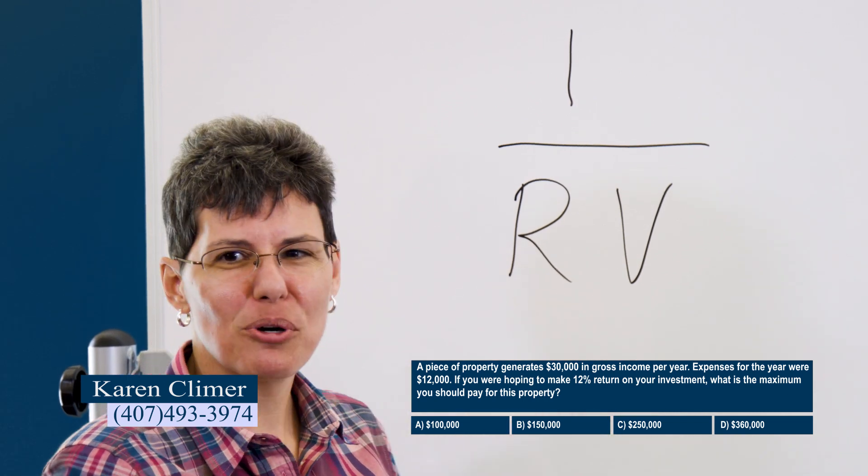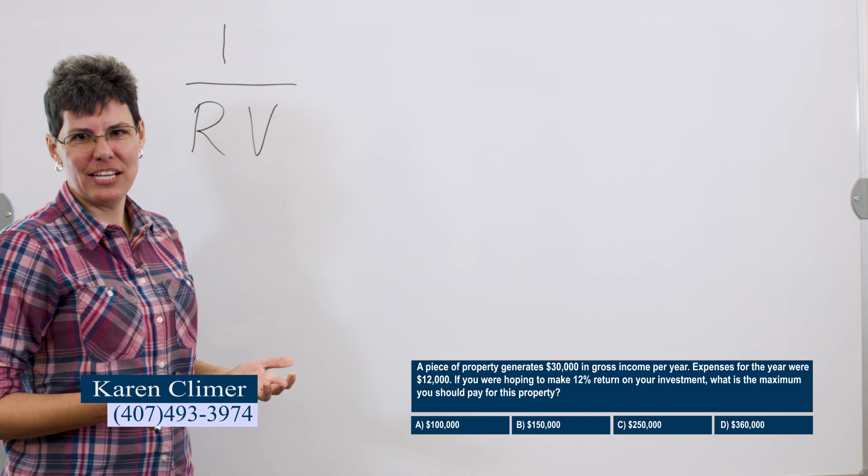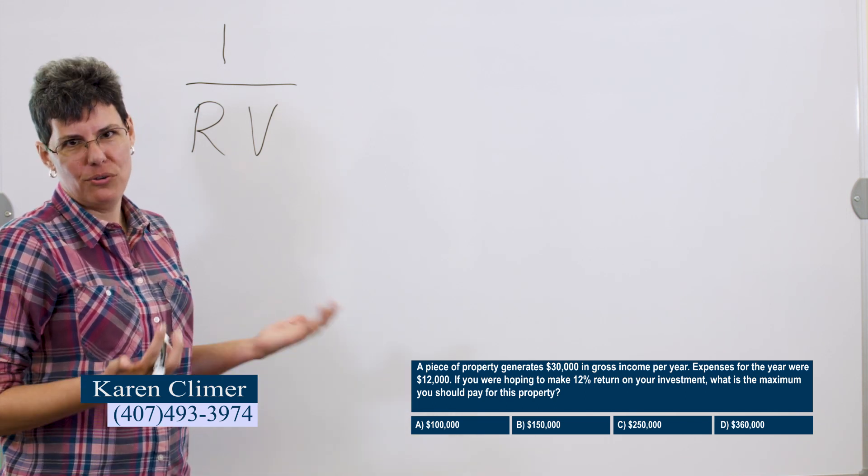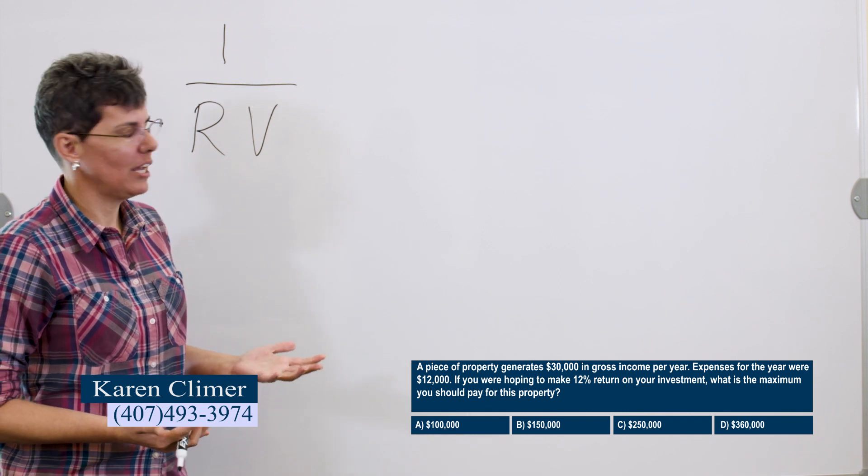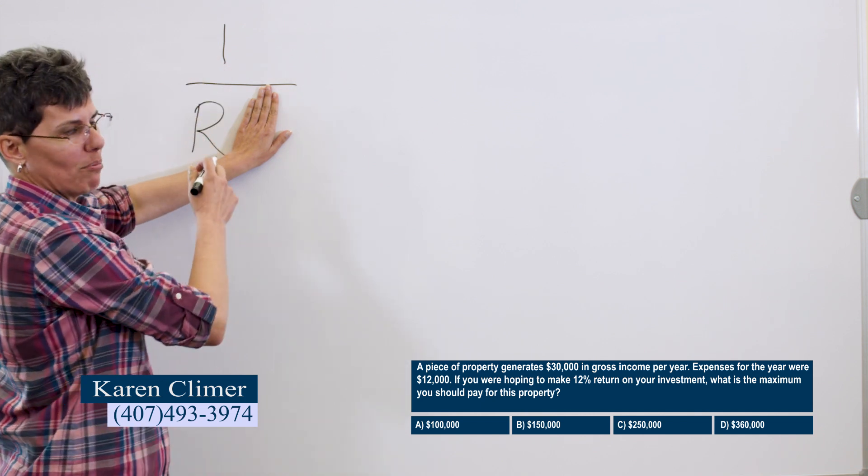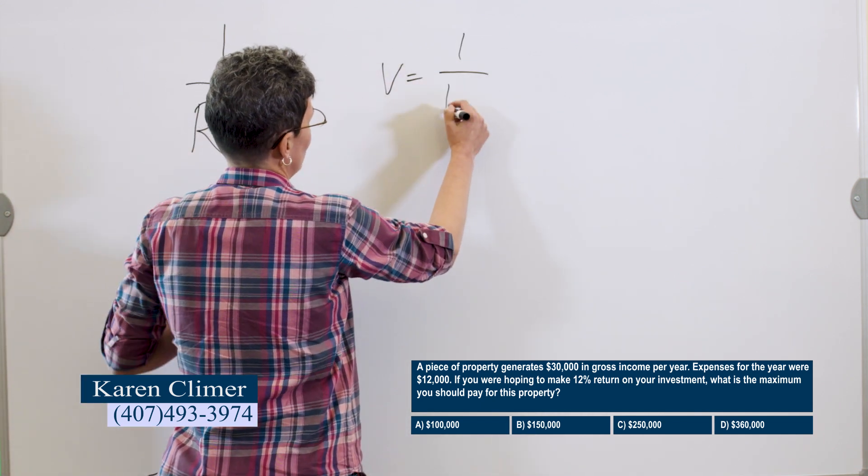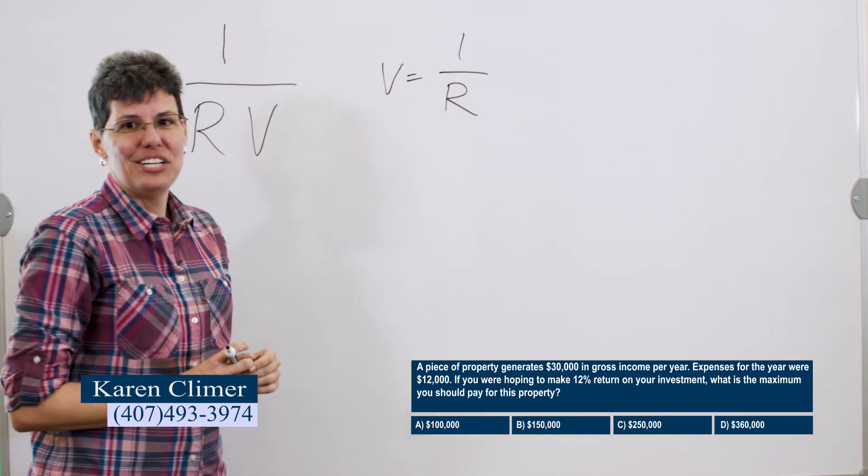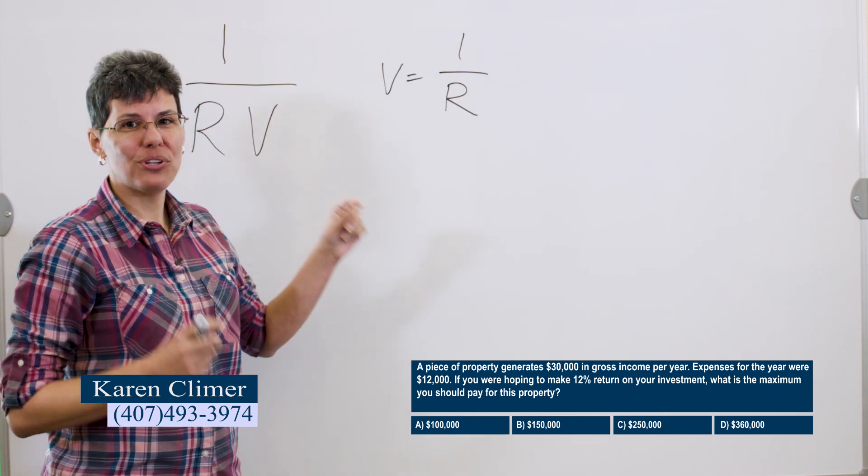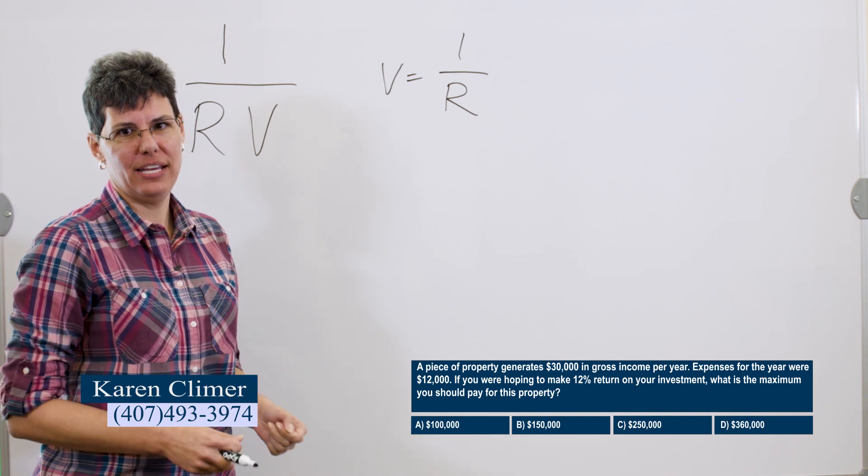This is a formula but it's really actually a memory peg. In this case we're looking for the maximum you should pay for the property, so the value of the property. Whichever one you're looking for you cover it up and that's the formula. So in this case the value is I over R. The income is annual net income. That's very important. Annual net income.